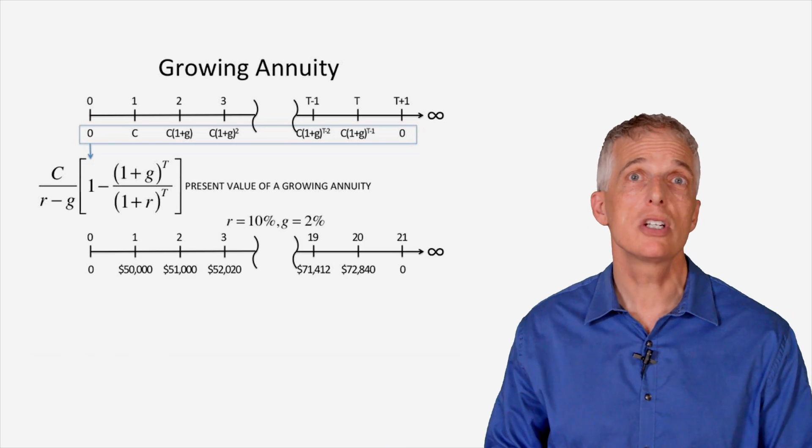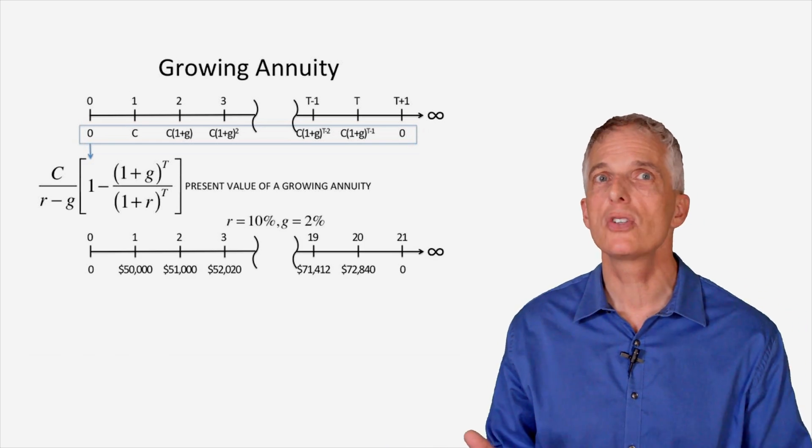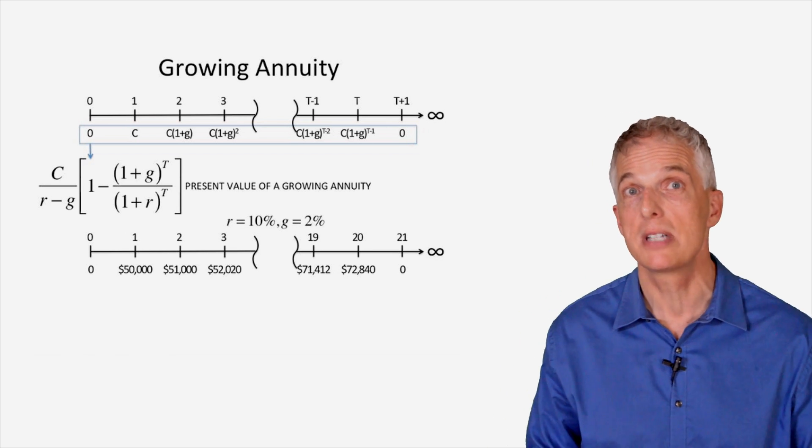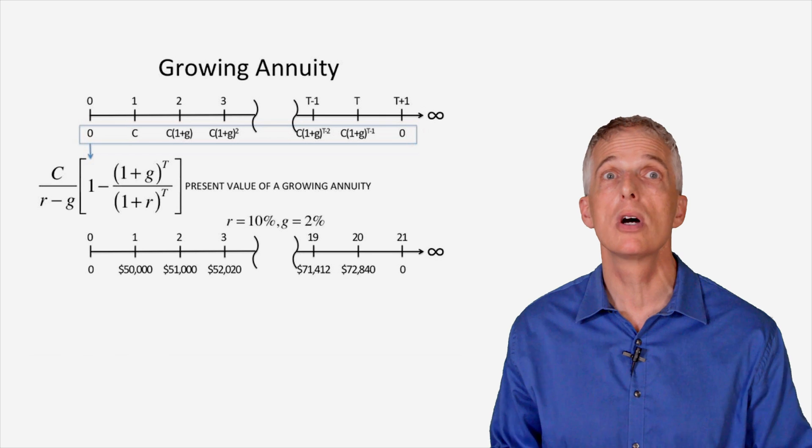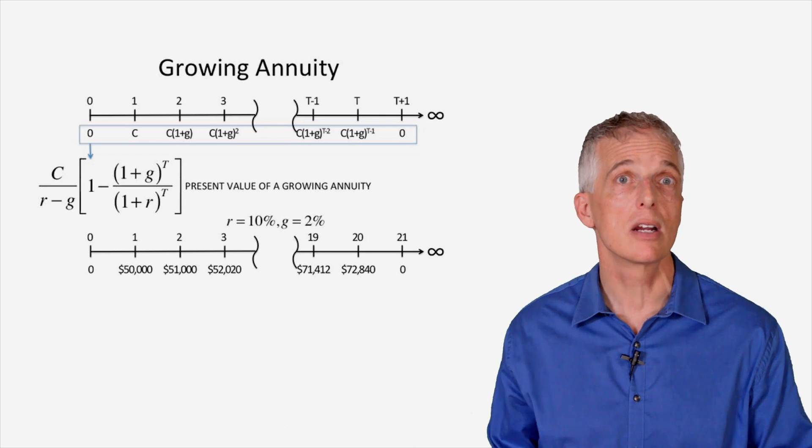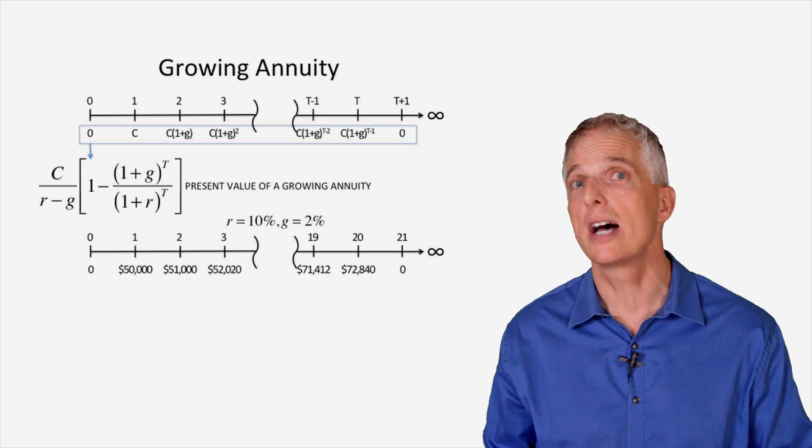To illustrate the application of the growing perpetuity formula, let's assume we are promised a $50,000 payment in one year, but after that, the payment will grow by 2%, such that in the second year it will be $51,000.